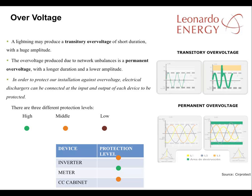To protect an installation against over-voltage, electrical dischargers should be connected at the input and output of each device needing protection. The inverter and control cables will meet a medium level of protection, while the meter will need high protection. The dangers here include lightning strikes that can produce short periods of transitory over-voltage with huge amplitudes. Network imbalances can result in permanent over-voltage with longer duration and lower amplitude.